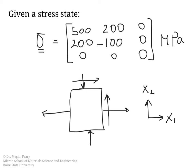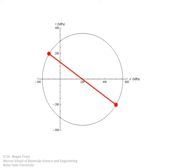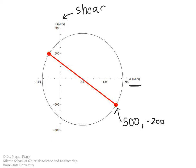Let's take a look at how that would look on the Mohr's circle. By convention, the x-axis shows the normal stresses, labeled here as sigma, and the y-axis shows the shear stresses, labeled here as tau. Our first point is at 500 — which is sigma 11 — and then the negative value of sigma 12, because a shear stress that produces a counterclockwise rotation is plotted below. So this is negative 200.